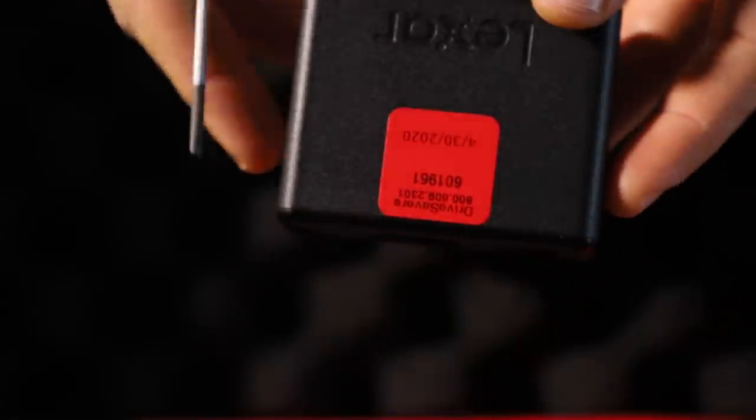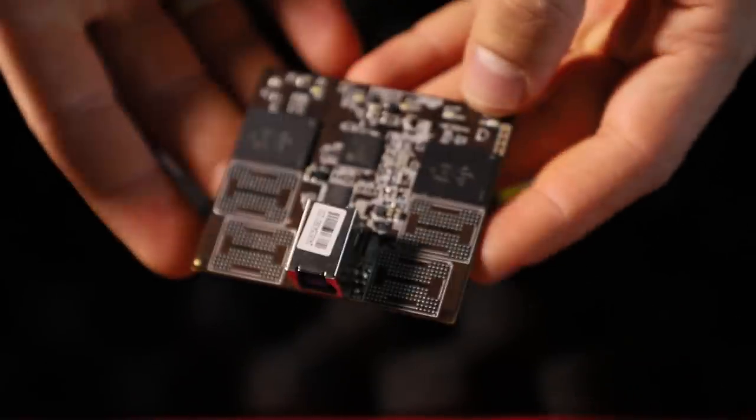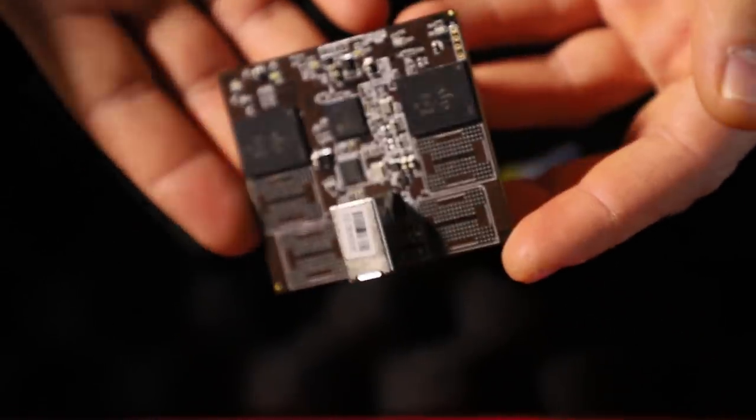To open it up we need a flathead screwdriver and around the edge there are a few clips. Very easily comes apart, especially if it's already been removed and they can see that Drive Savers did remove it in the past. What do we have inside?